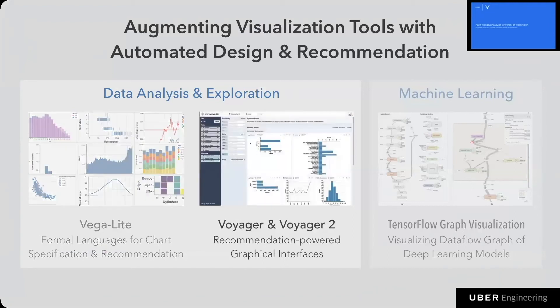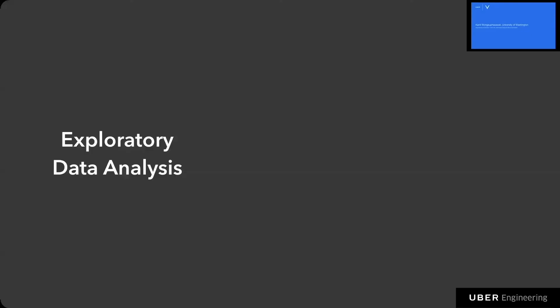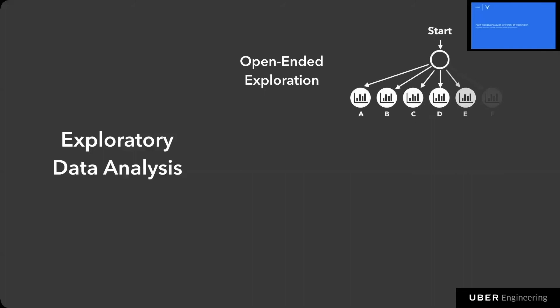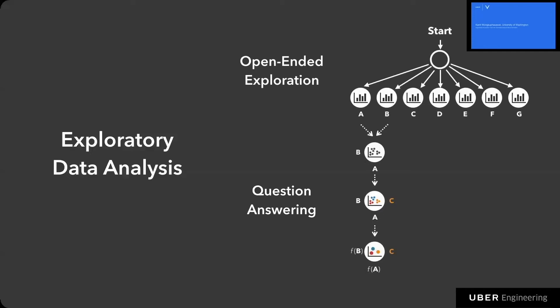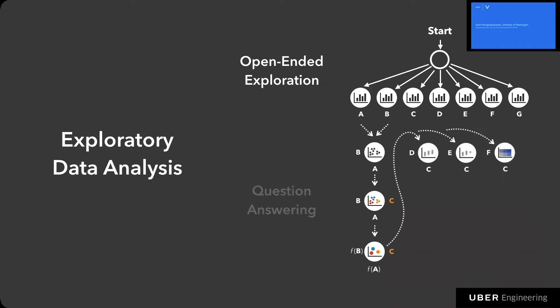Now let's see how we can build novel interfaces that accelerate data exploration with chart recommendation. If you receive a new dataset you haven't seen before, in an ideal exploration good analysts should perform two high-level tasks: first, begin with a broad exploration to familiarize themselves with different variables in the dataset; then after getting a broad overview, focus on answering specific questions — for example, examining if a pair of fields are correlated. Investigating these questions may spark exploration of other relevant fields, leading again to more focused analysis.